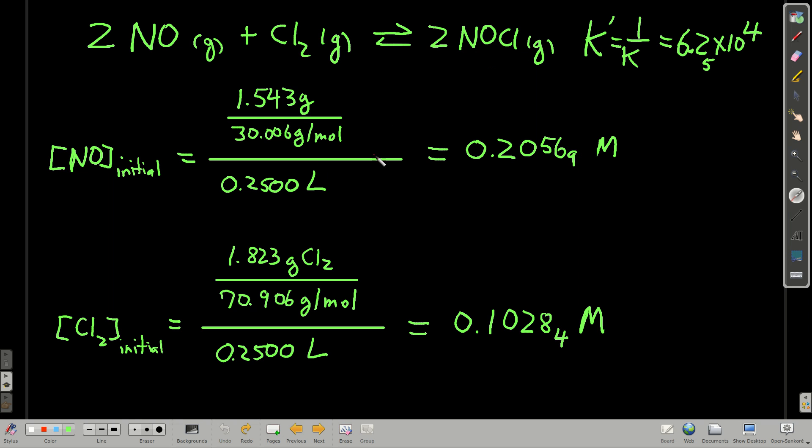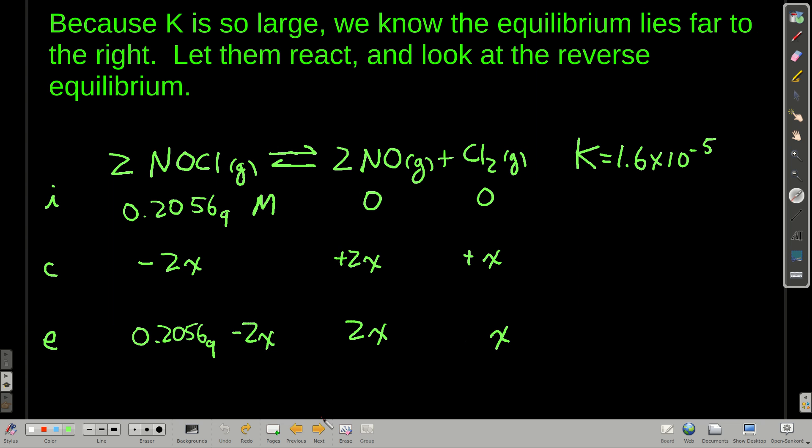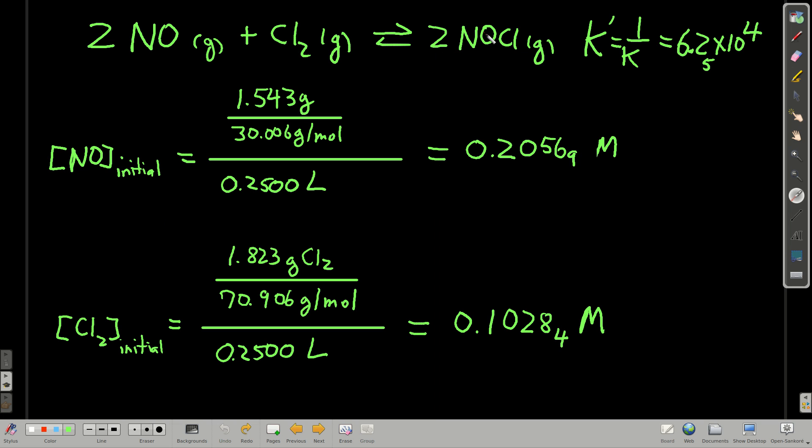So, we're going to start by calculating our concentrations of our nitrogen monoxide and chlorine. Initially, we get these two numbers here. Now, okay, again, because k is so large, we're going to say basically we make this many moles per liter of nitrogen of this product right here. So, the idea is, the way this was set up, the way I set these numbers up, is we have pretty much twice the number of moles of this as we have chlorine. And so, it doesn't really matter what you use as the limiting reactant because they both will be used up.